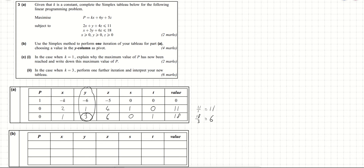We now perform the pivot operation. We want to turn the pivot value 3 into a 1, so we replace row 3 with row 3 divided by 3. This gives: 0 divided by 3 is 0, 1 over 3 is one-third, 3 divided by 3 is 1, 6 over 3 is 2, 0 over 3 is 0, 1 over 3 is one-third, and 18 over 3 is 6.